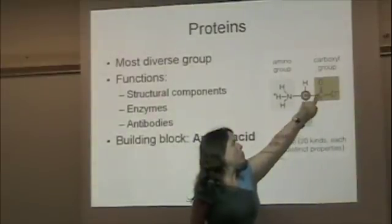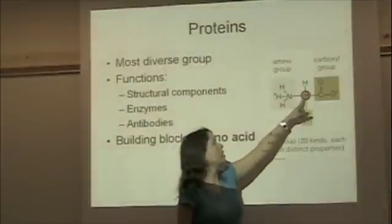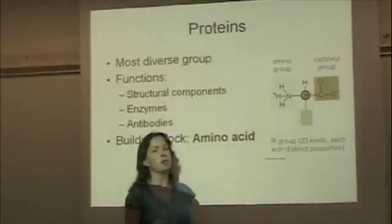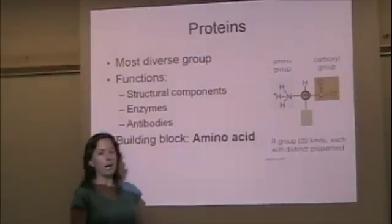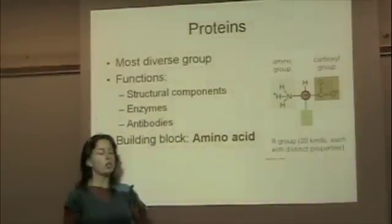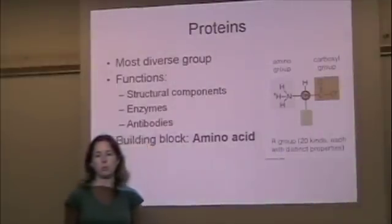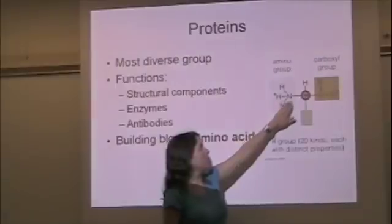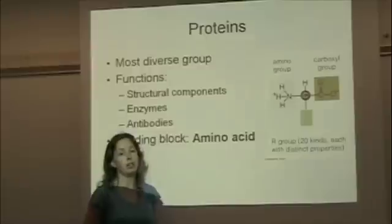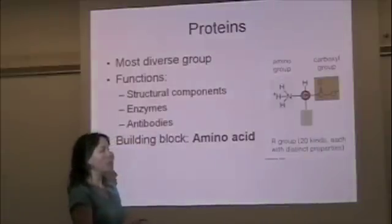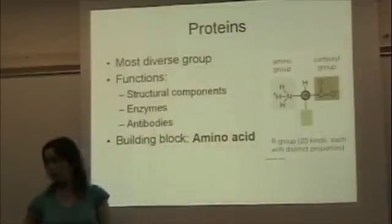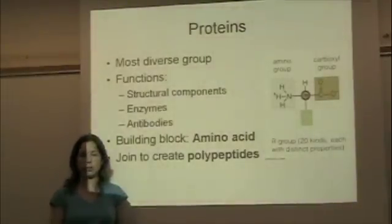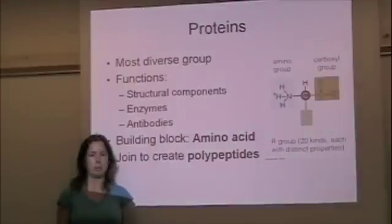The amino group comes off a central carbon. On the other side there's a carboxyl group — a carbon double bonded to an oxygen and single bonded to an OH. There's also a hydrogen, and then the last part is called the R group, which is variable. It might just be a hydrogen or it might be a ring structure — there are 20 different possible R groups. The amino group, central carbon, carboxyl group, and hydrogen are standard. This is the first structure we've looked at that has nitrogen in it. We can join multiple amino acids together to create larger proteins called polypeptides.